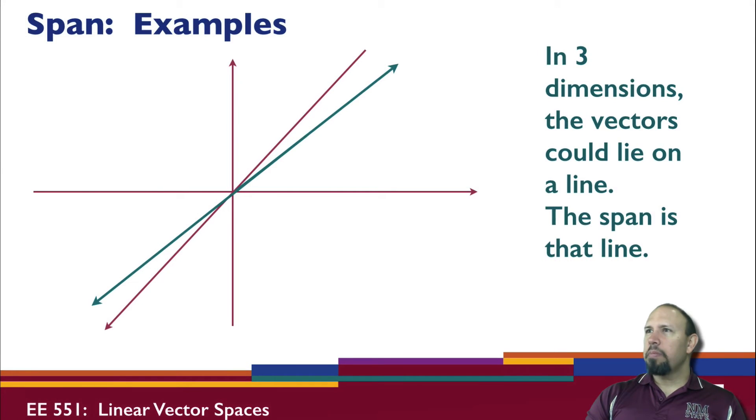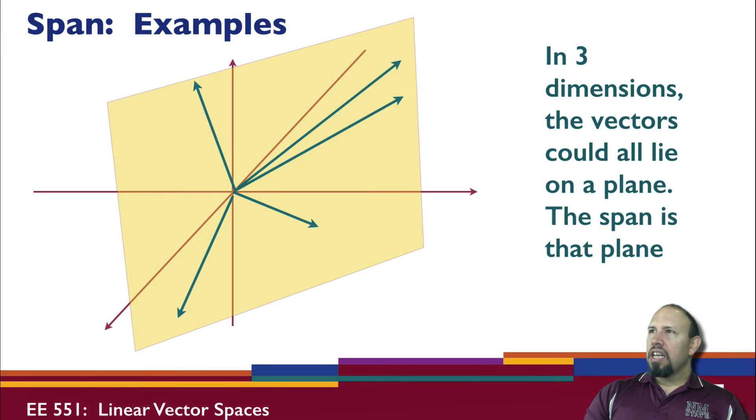In three dimensions now, this is a three-dimensional graph with x, y, and z. The vectors could lie on a line, in which case the span is that line. If you have a set of vectors that are all on the plane, and then you have one vector that's not on the plane, then the span of those vectors is actually the entire space for three dimensions.